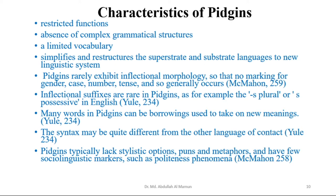Here are some characteristics of Pidgin. Pidgins have restricted function and absence of complex grammatical structures — only simplified grammatical structures. They have a limited vocabulary, barely necessary for communication. Pidgin simplifies and restructures the superstrate and substrate languages into a new linguistic system. Through Pidgin, a new language develops with simplified and restructured versions of both the higher and lower languages. Pidgins rarely exhibit inflectional morphology, so no marking for gender, case, or number generally occurs.